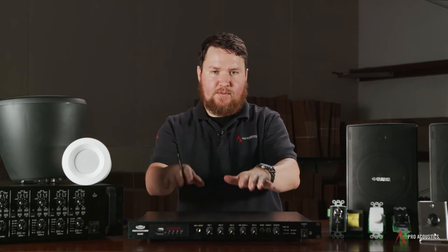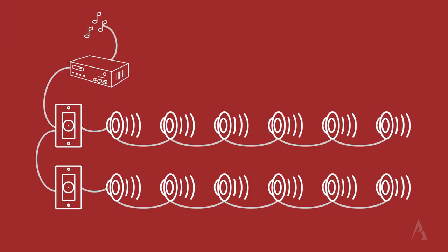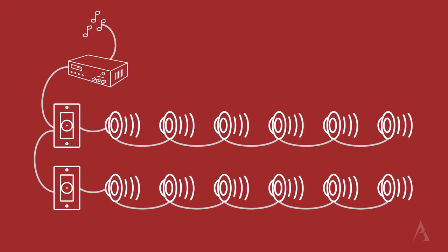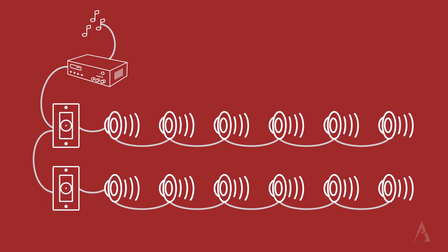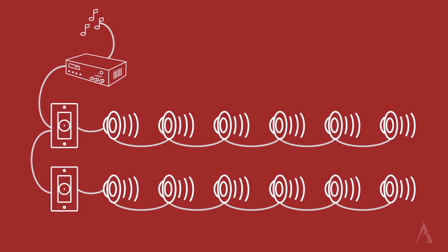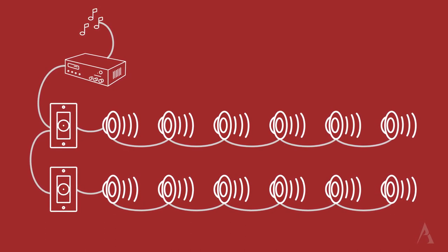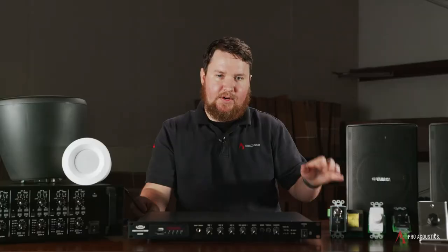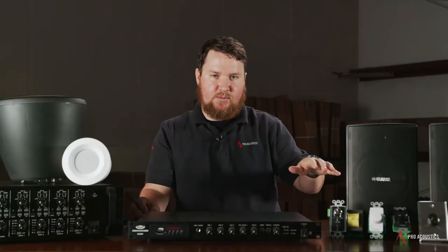When adding volume zones to your application, we can wire from the amplifier to one of these attenuators or to multiple attenuators. You can do that by doing multiple home runs from the amplifier to multiple individual attenuators, or we can wire from an amplifier in parallel to multiple individual volume controls as needed, and then connect the speakers that we want to control.